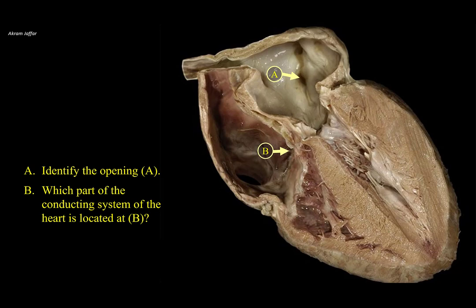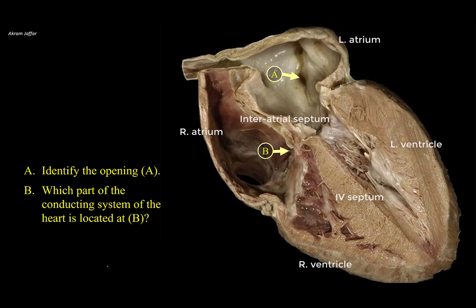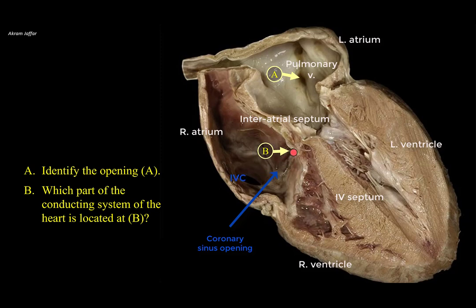Identify opening A, and which part of the conducting system is located at B. This is a longitudinal section of the heart showing the four chambers, with the section more toward the posterior aspect. You can see the left atrium, located posterior to the right atrium, and the left ventricle, posterior to the right ventricle. The interatrial septum separates the two atria, and the interventricular septum separates the ventricles. The inside of the left atrial cavity shows the openings of the four pulmonary veins. A is therefore the opening of the inferior left pulmonary veins, which bring oxygenated blood from the lung. Arrow B points to the interatrial septum in close proximity to the coronary sinus opening, the inferior vena cava opening, and the tricuspid valve attachment — this is where the AV node is located.